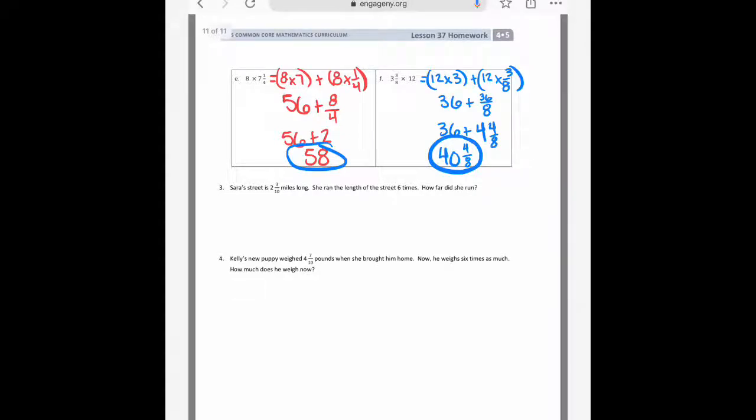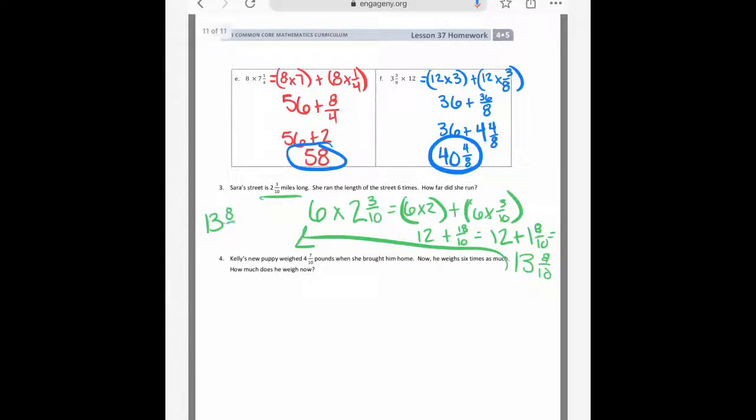Last two. Sarah's street is 2 and 3/10ths miles long. She ran the length of the street six times. How far did she run? So, I'm going to say 6 times 2 and 3/10ths. Which is the same as saying 6 times 2 plus 6 times 3/10ths. And 6 times 2 will give me 12. 6 times 3/10ths will give me 18/10ths. 18/10ths is the same thing as 1 and 8/10ths. When I add those together, I'll get 13 and 8/10ths. That's kind of hard to see. It's all smushed over here. So, I'm going to move it over with an arrow. So, my final answer is 13 and 8/10ths miles.